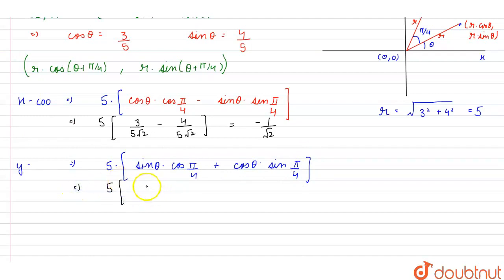Solving it similarly, we will get this as equal to 5 into 4 upon 5 root 2 plus 3 upon 5 root 2. So this gives us the y-coordinate as 7 by root 2.